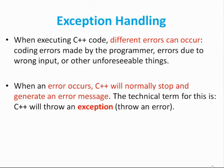When executing C++ code, different errors can occur: coding errors made by the programmer, and errors due to wrong input or other unforeseeable things. When an error occurs, C++ will normally stop and generate an error message. The technical term for this is C++ will throw an exception. When the error occurs in a try block, or an exception is thrown in the program in another block, it would be handled by that block.